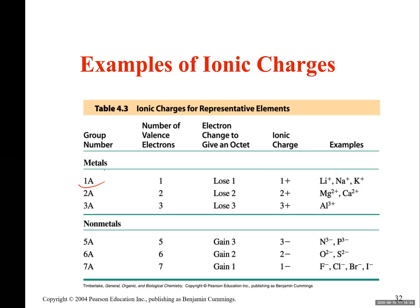You can predict the charges of main group metals and non-metals. If they are in group 1A, they make plus one charge. If they are group 2A, they make plus two charge. If they are in group 3A, like aluminum, they make plus three charge.